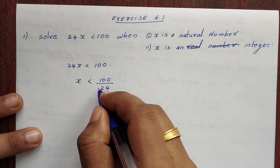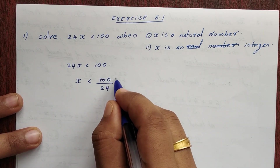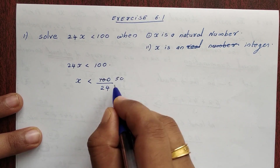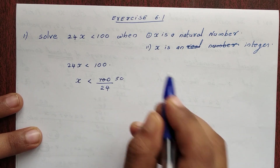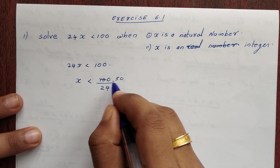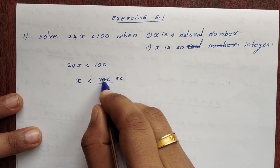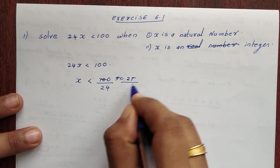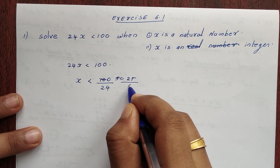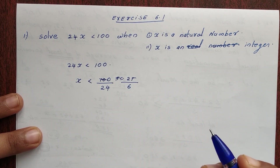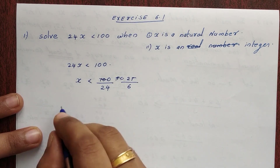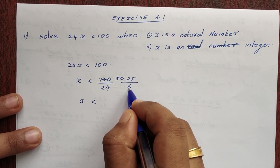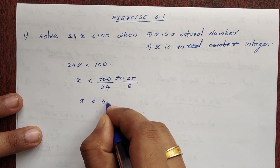We will simplify 100 divided by 24. Cancelling common factors, we get x less than 4 point something — approximately 4.1 or 4.2.